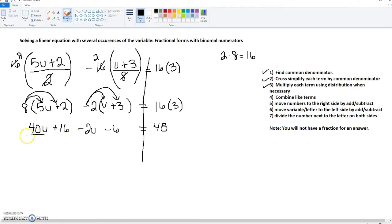Our next step is to combine like terms. We've got 40u and minus 2u here. So we're going to combine those together. 40 minus 2 gets us 38u, and 16 minus 6 gets us plus 10 equals 48.